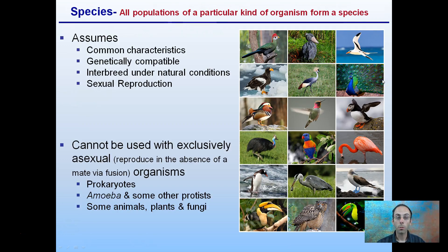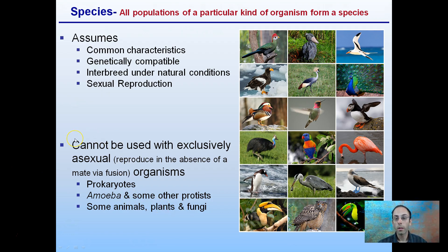What's a species? If there's a species living together, how do we define a species? Species are all populations of a particular kind of organism. This assumes common characteristics within a similar species — genetically compatible, able to interbreed under natural conditions, and sexual reproduction can occur. This cannot apply exclusively to asexual organisms — how they replicate or multiply. Asexual reproduction is reproduction in the absence of fusion of organisms, and prokaryotes, amoeba, and some animal and plant species can reproduce by asexual means.